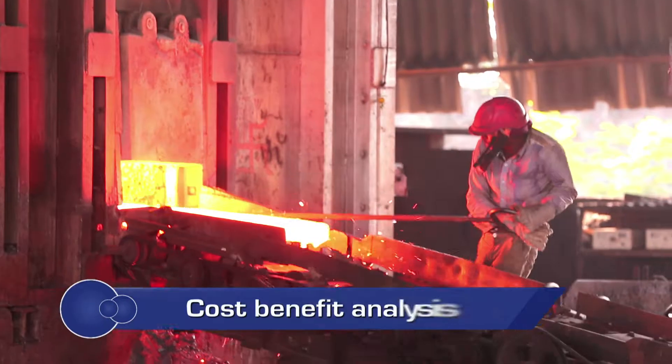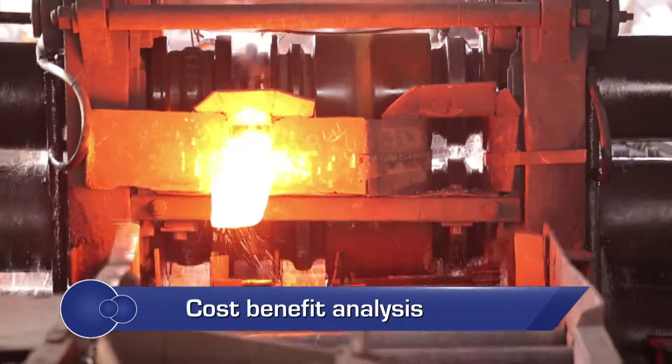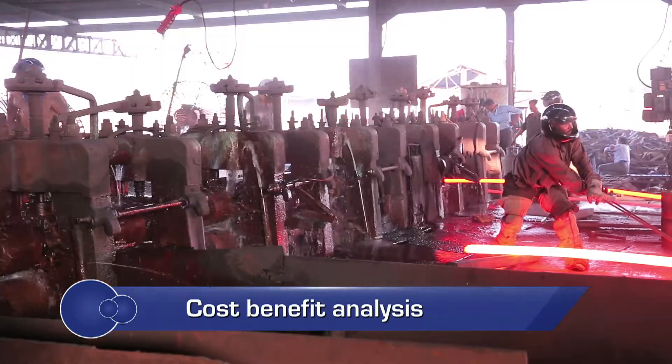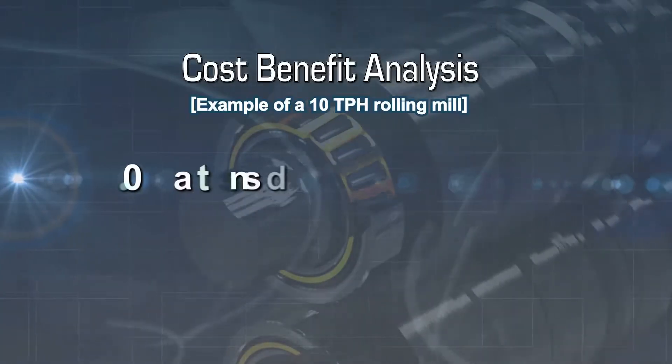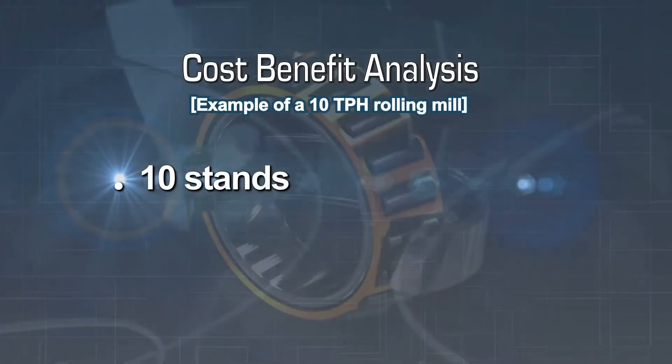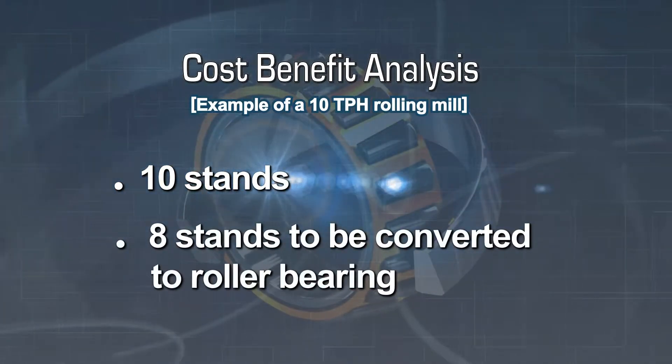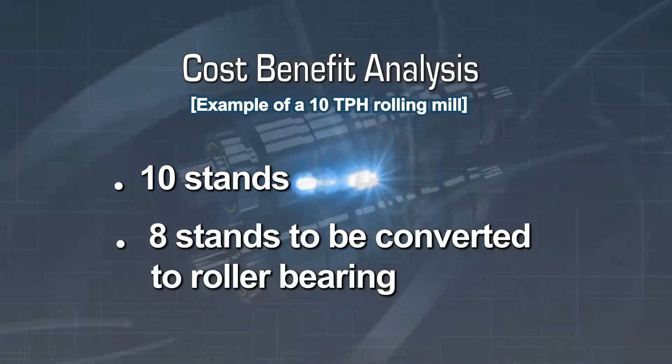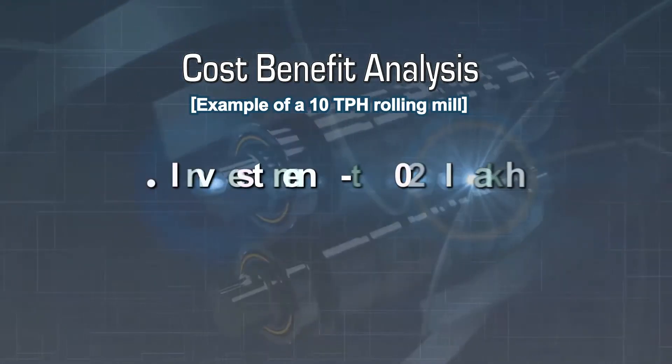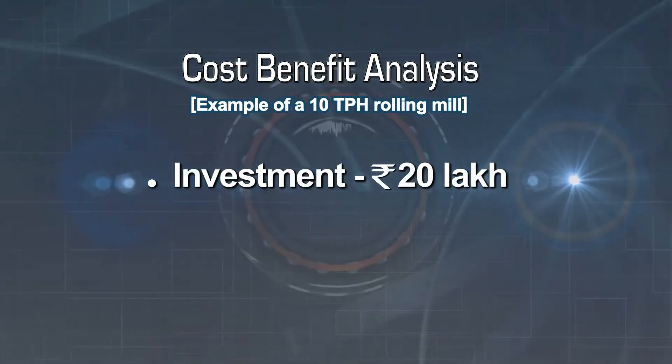To better understand the benefits in terms of economics, let's take the example of a 10 TPH rolling mill. The rolling mill consists of 10 stands equipped with fabric bearing. Let's consider conversion of 8 stands from fabric to roller bearing. The changeover from fabric to roller bearing would mean an investment of 20 lakh rupees.